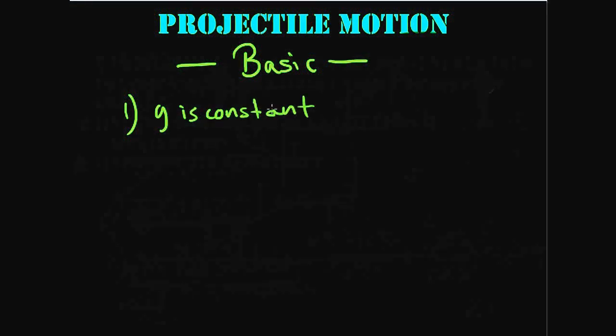All right, so a recap on this projectile motion video. Remember this is just a basic video kind of helping you to see exactly what's going on. There's two conditions: g is constant - we're not thinking about how g can vary depending on how far from the surface we get. We're assuming all the problems are going to happen relatively near the surface, so we will always use a relatively constant value for g.